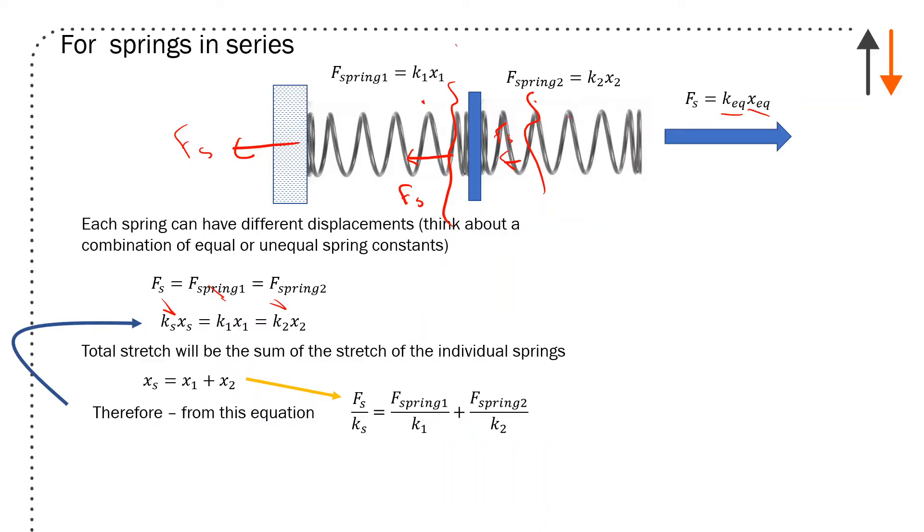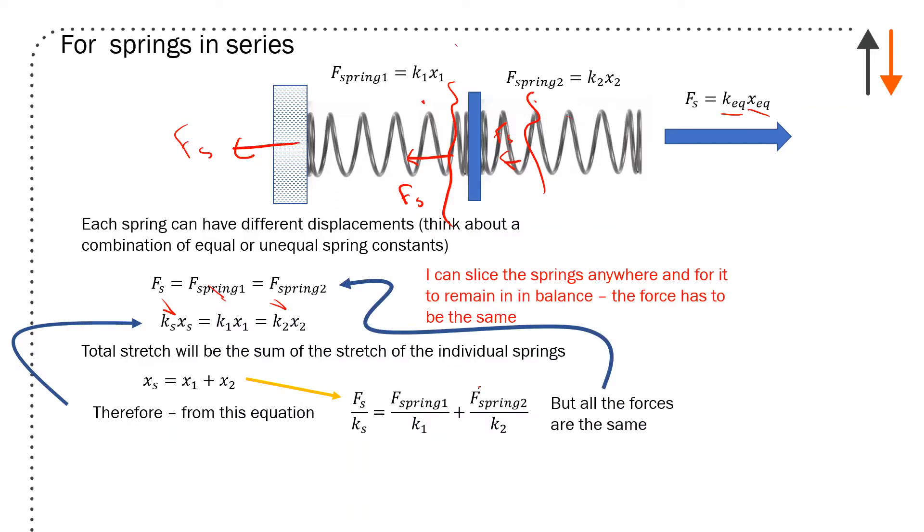So I can substitute in these expressions. I know that x_s equals F_s over k_s, x_1 equals F_spring1 over k_1, and F_spring2 over k_2 equals x_2. Since all of the forces remain constant, these forces are all equal, which tells me that the equivalent spring is the inverse: 1/k_s equals 1/k_1 plus 1/k_2. This is a useful relationship for series springs.